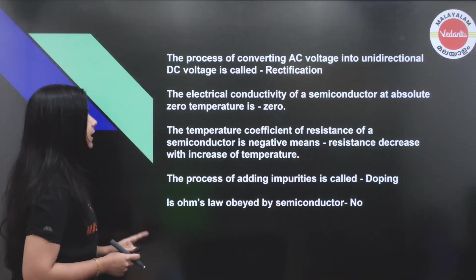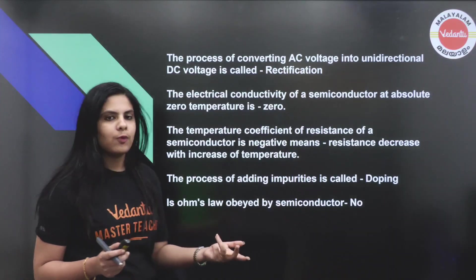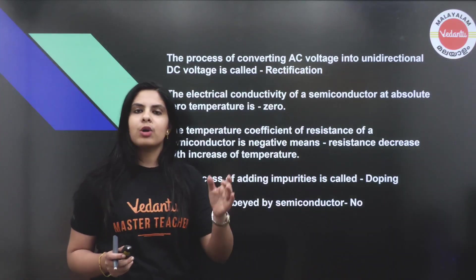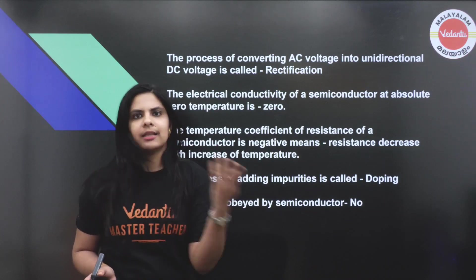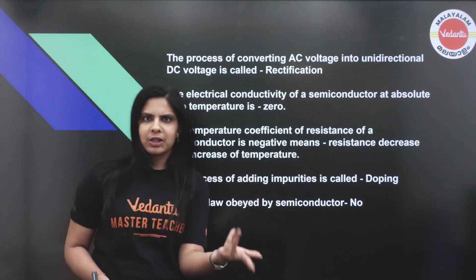The process of converting AC voltage into unidirectional DC is known as rectification.